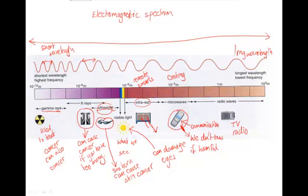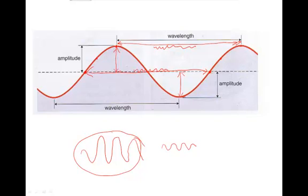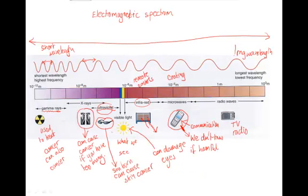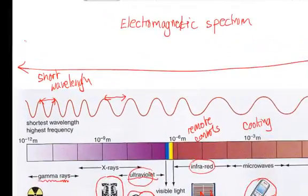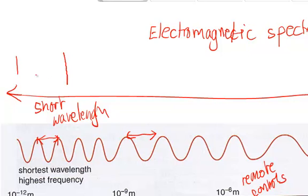As well as wavelengths, you can also describe a wave by its frequency. Now this is how many waves there are in a second. So a short wavelength, if we have say a second here, you would get lots of waves per second. So that would be a high frequency.